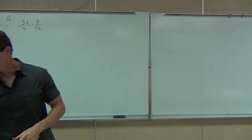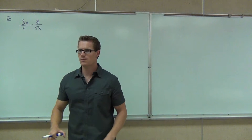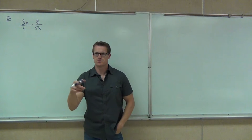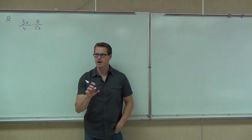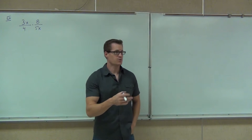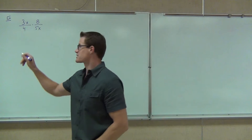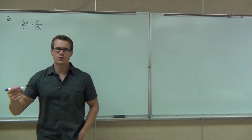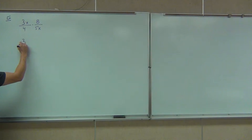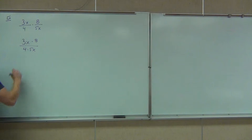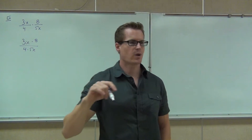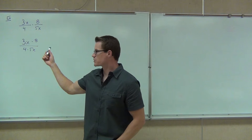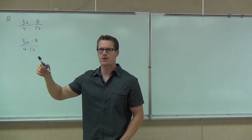So 3x over 4 times 8 over 5x. Ladies and gentlemen, last time when we were doing our fractions, what's the first thing that we did before we multiplied, before we simplified, before anything? What did we do? Write it as one fraction first. And we're still going to do that. We can extend the line if you'd like, or we're going to simply write 3x times 8 over 4 times 5x. Do I want to multiply this and get 24x over 20x, or should I simplify right now?